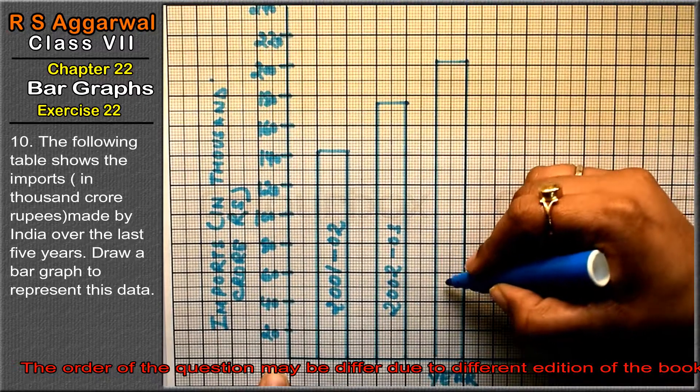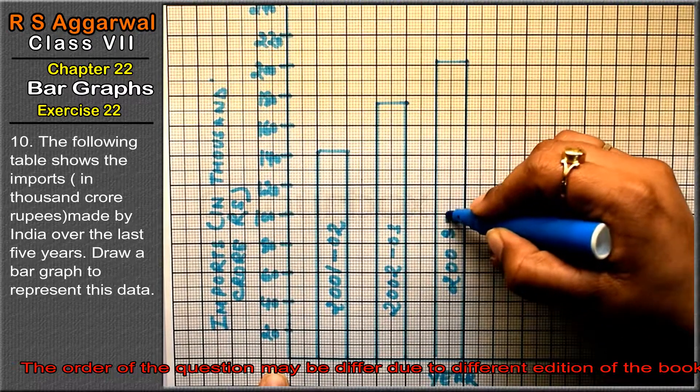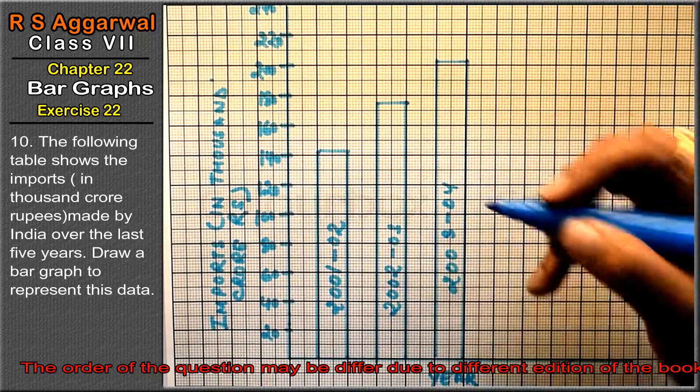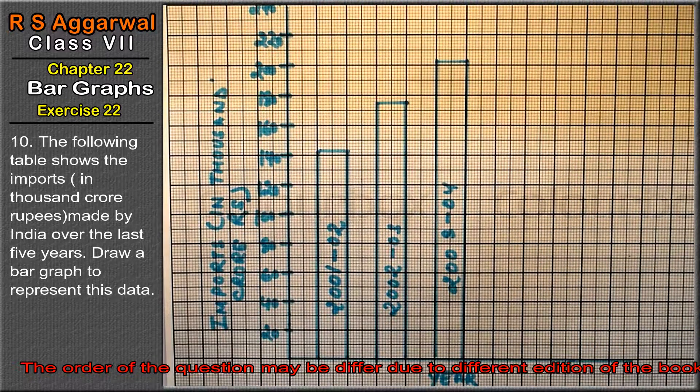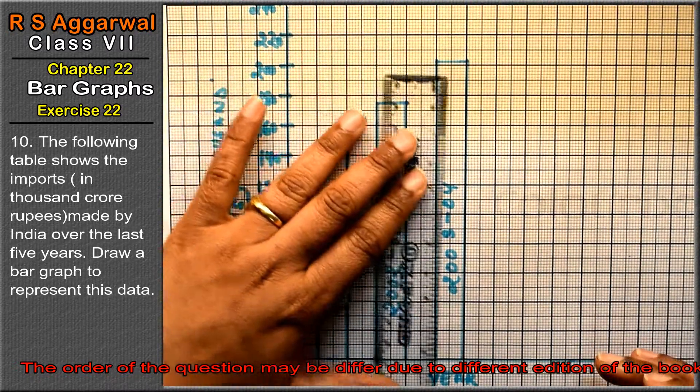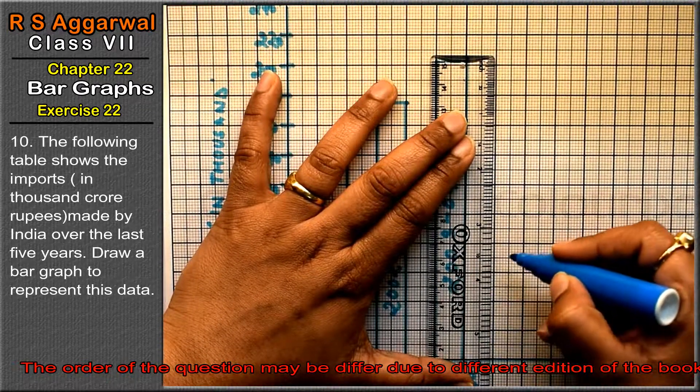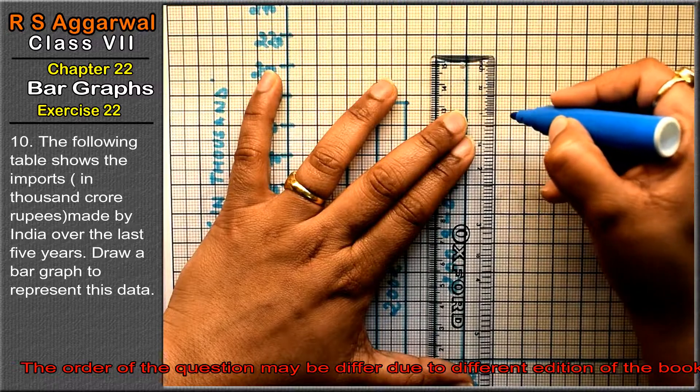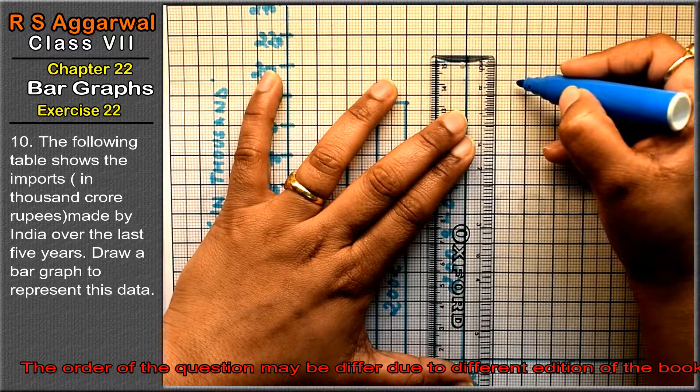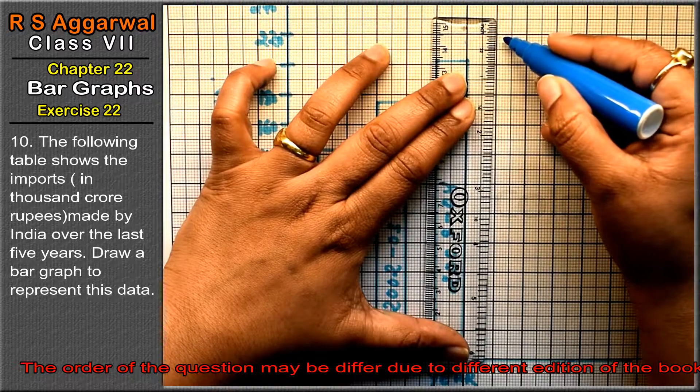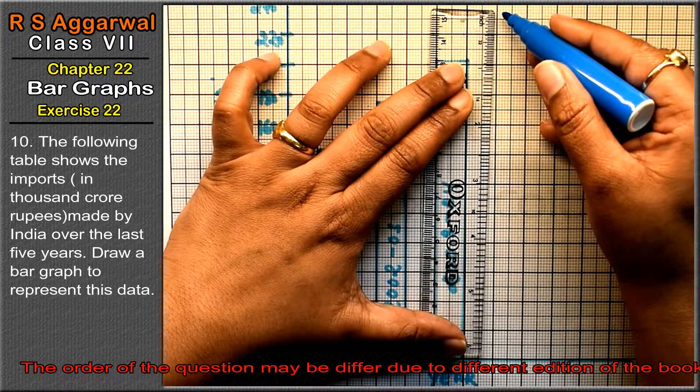This is 2003-04. Now for 2004-05, we need 116 blocks. We count to 110, then 6 more blocks above to mark the bar.